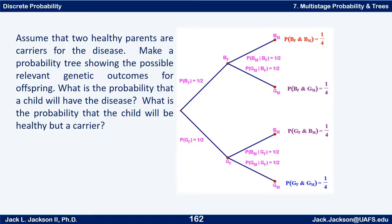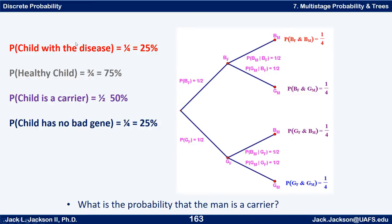So the probability that the child will have the disease is one-fourth. The probability of a healthy child — one that doesn't have both bad genes — is three-fourths. The probability the child is a carrier is one-half, and the probability the child is completely free of the bad genes is twenty-five percent.